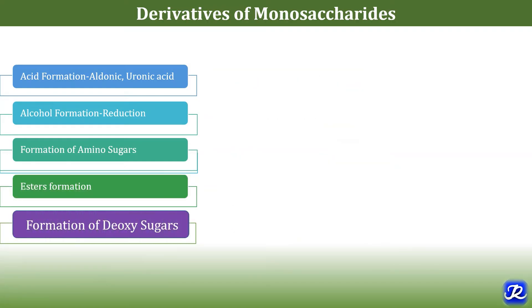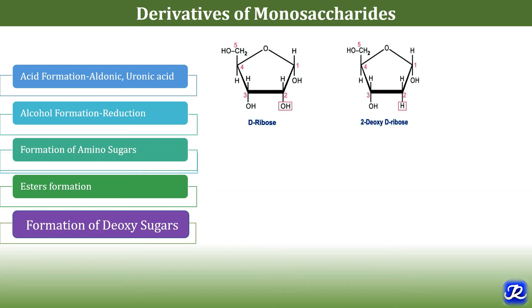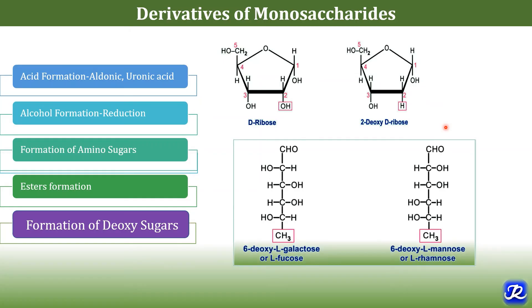Deoxy sugars are an important derivative of monosaccharides. They are formed by removal of oxygen from a hydroxyl group of monosaccharides, lacking an oxygen atom at carbon number 2. 2-Deoxyribose is the sugar component of deoxyribonucleotides present in DNA. Another example is 6-deoxy-L-galactose, also called L-fucose, which is a component of glycoproteins, blood group substances, and bacterial polysaccharides.